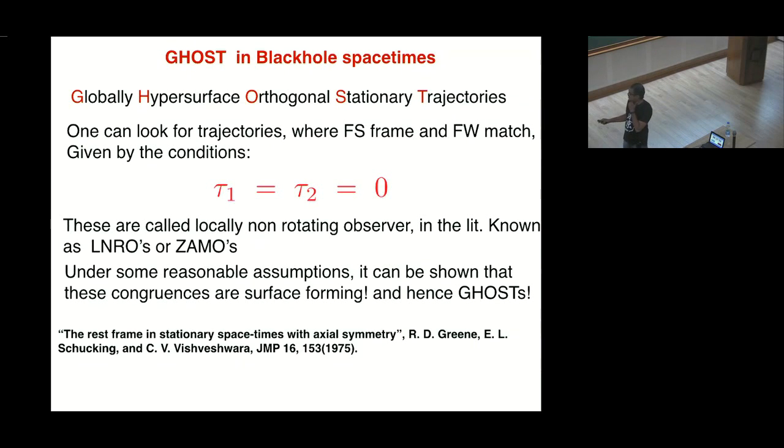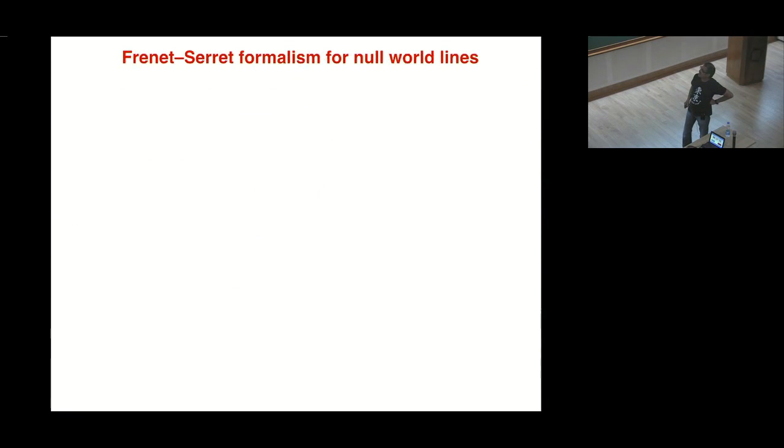That is why these GHOS are very fundamental to stationary space. This work goes back to 1975 working with stationary spacetime and rest frames. Because these do not have any spatial rotation, an observer who is following them is considered to be at rest, and they are the closest frame to the Newtonian rest frame. This idea was used further, but before going into that, I will briefly talk about Frenet-Serret formalism extended to null world lines.